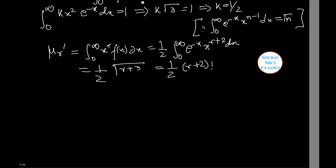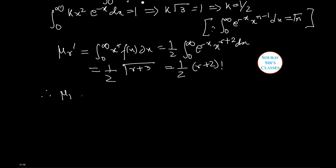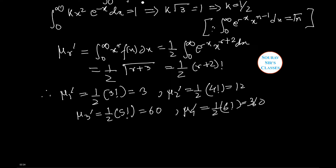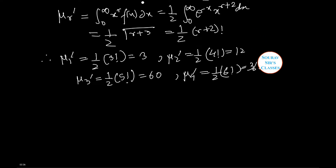Putting values into this formula: mu 1 dash equals 1/2 times 3 factorial, which equals 3. Mu 2 dash equals 1/2 times 4 factorial, which equals 12. Mu 3 dash equals 1/2 times 5 factorial, which equals 60. And mu 4 dash equals 1/2 times 6 factorial, which equals 360. These were the raw moments.